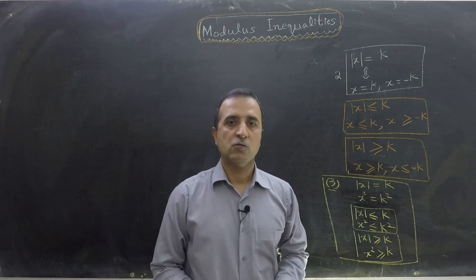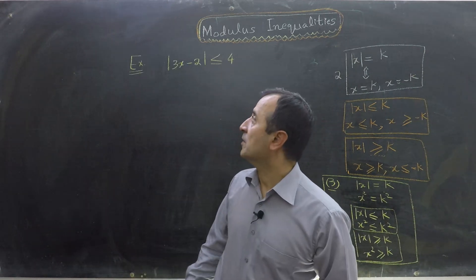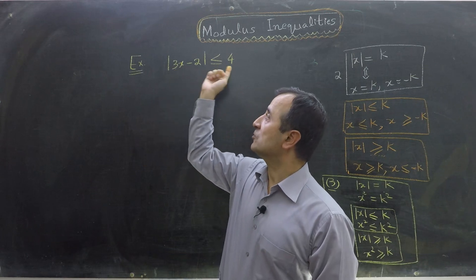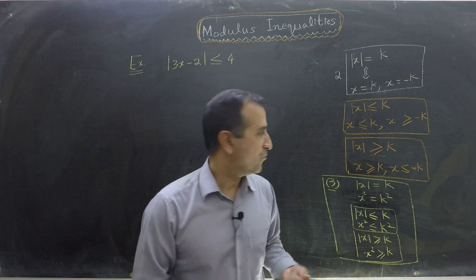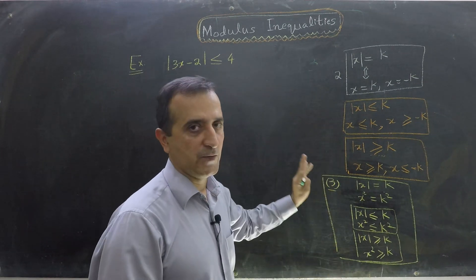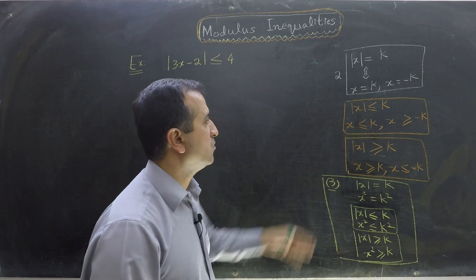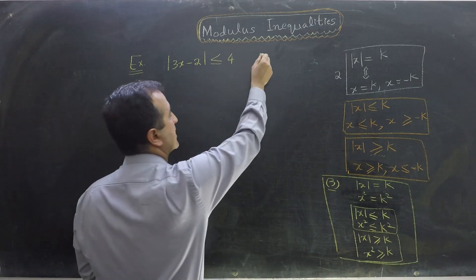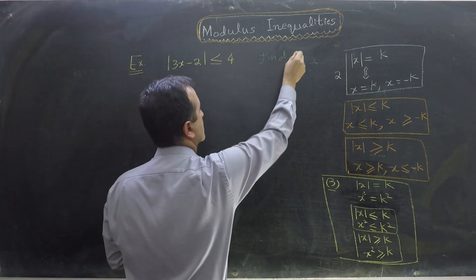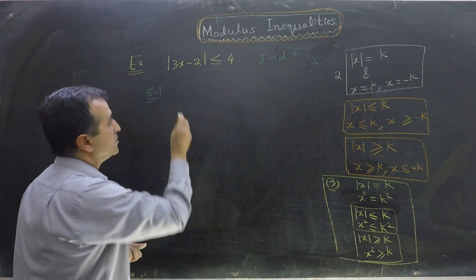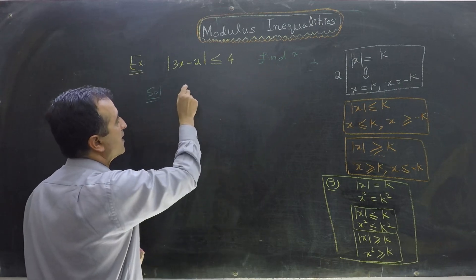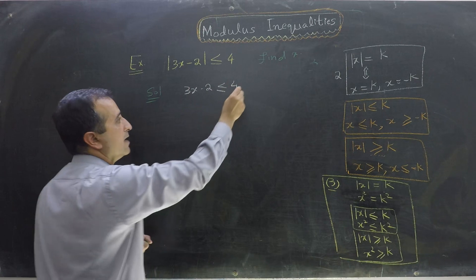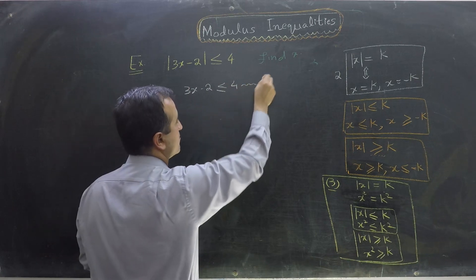Let's do some examples to make these rules clear. In our first example, we are given mod of 3x minus 2 is less than or equal to 4. Since 4 is positive, we can use rule number 2 or rule number 3. I am using rule number 2. According to rule number 2, I write 3x minus 2 is less than or equal to 4 — I call this equation number 1.